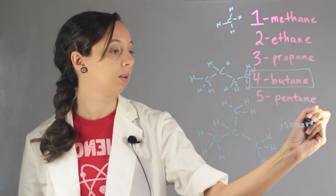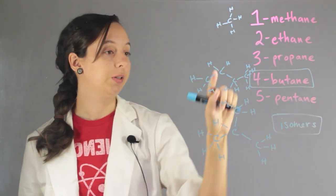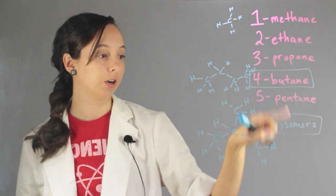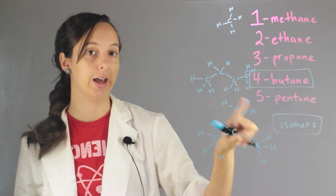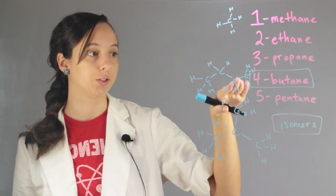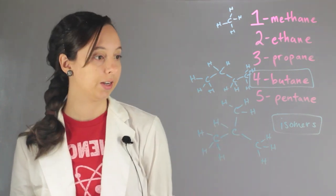So butane is an isomer of isobutane. Isobutane has an isomer in butane. And this is the relationship.